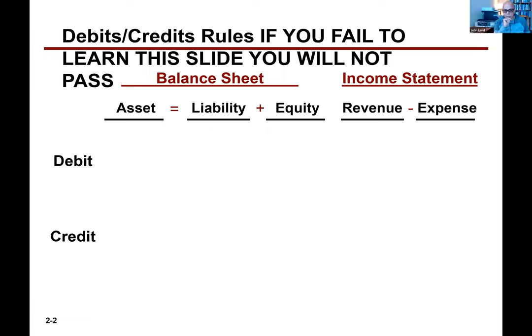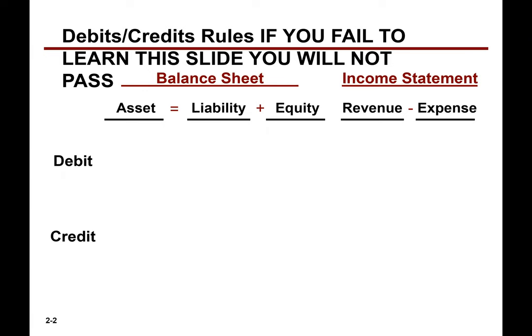To decrease an asset, we credit. Liability to increase, we will? Credit. Excellent. To decrease, we will? Debit. Very good. To increase a stockholders' equity account like common stock, we will? Credit.